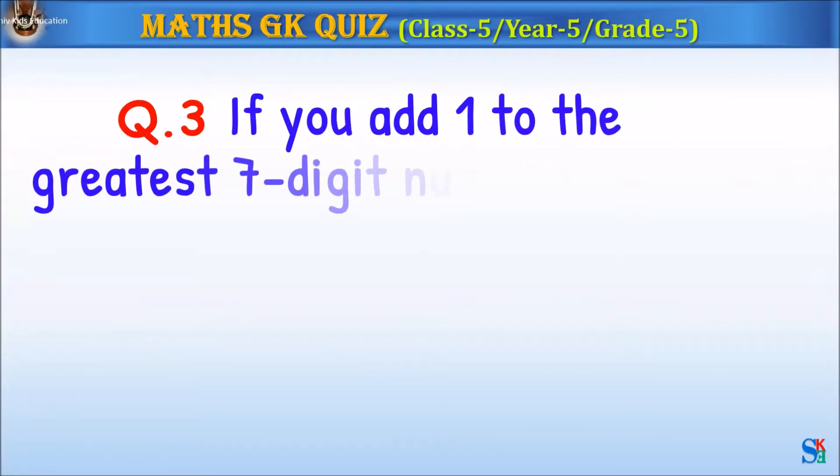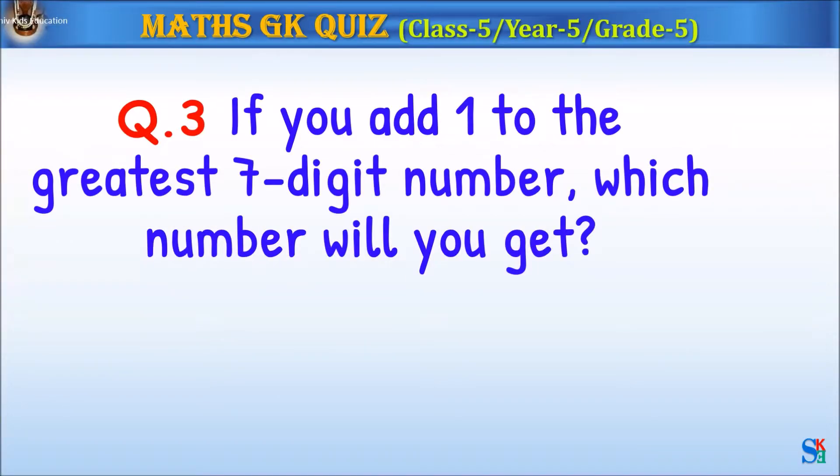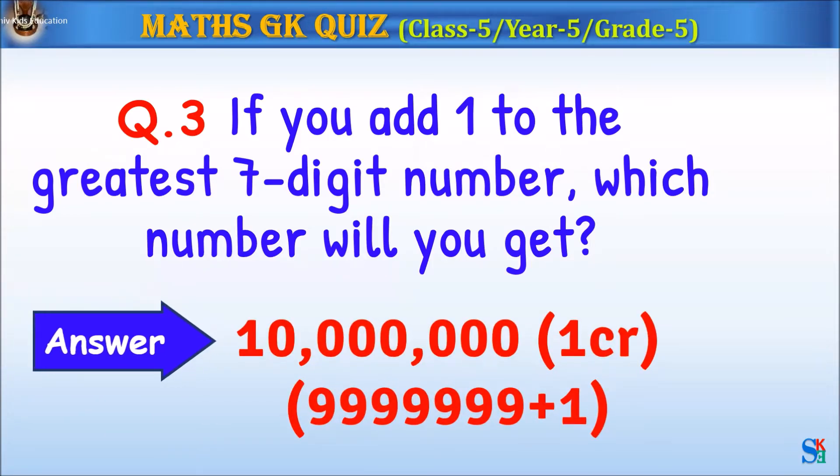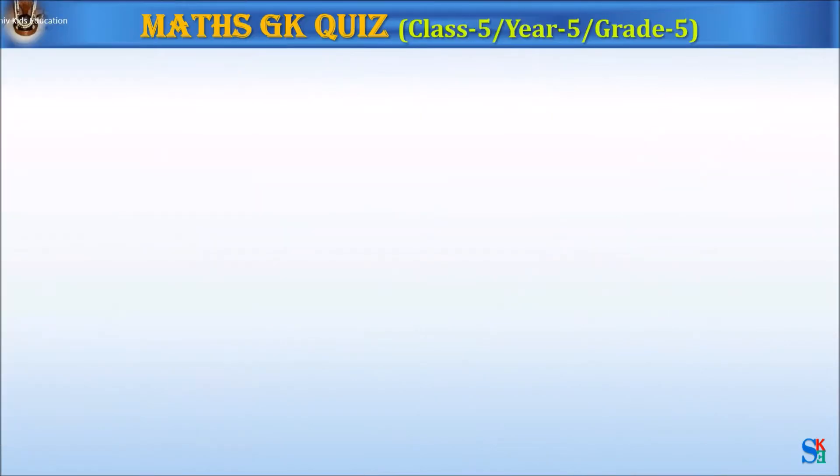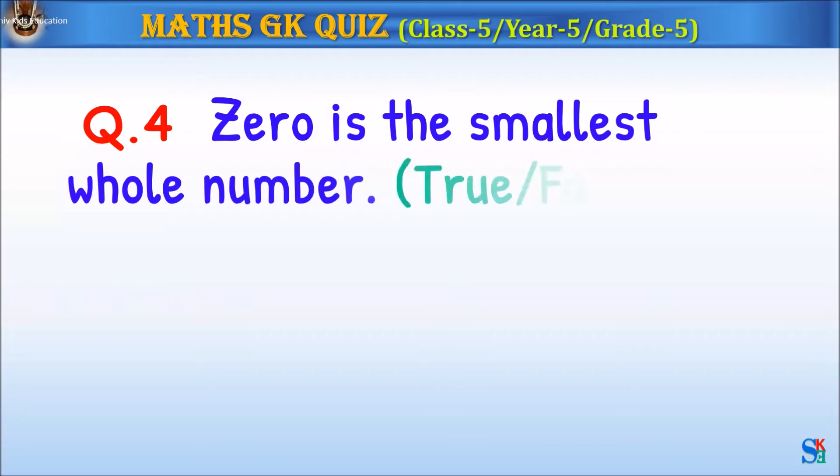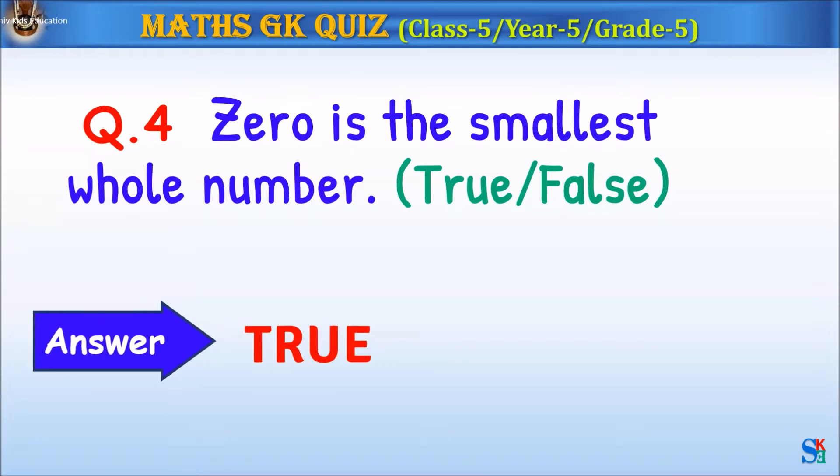Question 3: If you add 1 to the greatest 7-digit number, which number will you get? The answer is 1 crore. Question 4: 0 is the smallest whole number, true or false? The answer is true.